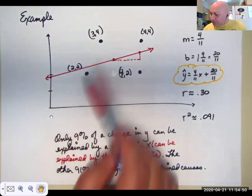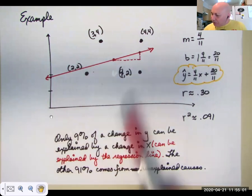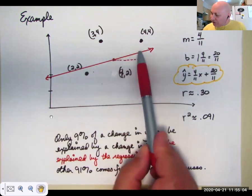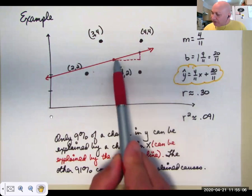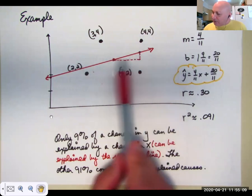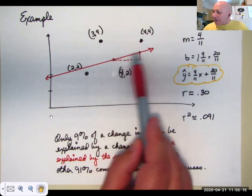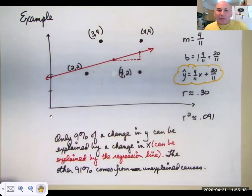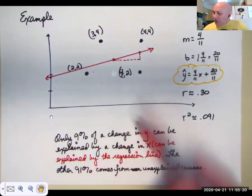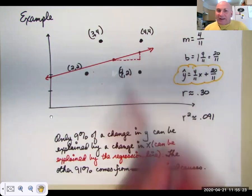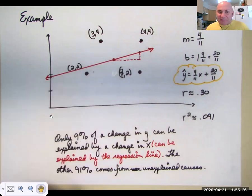That means that there's so much variation in these data points that only 9% of a change in y can be explained by a change in x. So in other words, as I go from here to here on the regression line, here's the change in y, here's the change in x. So because there's a regression line, given a change in x, I would expect a certain change in y, unless the slope is 0.